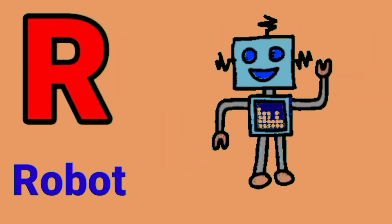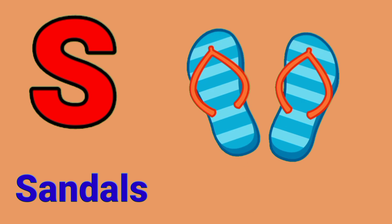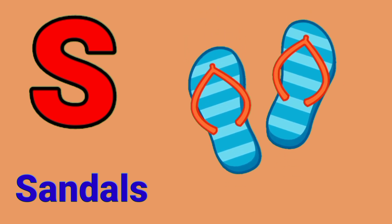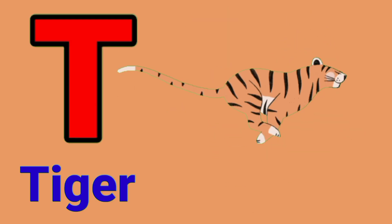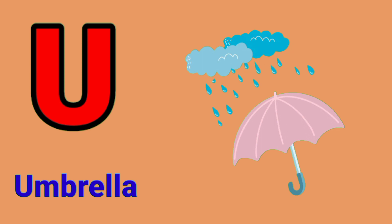R for robot. S for sandals. T for tiger. U for umbrella.